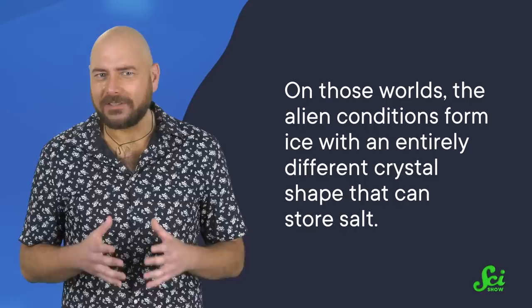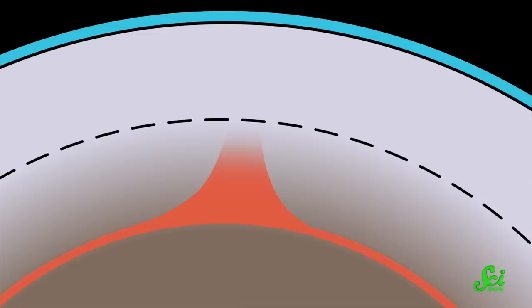But Earth's ice isn't under high pressure like the ice on those exoplanets. On those worlds, the alien conditions form ice with an entirely different crystal shape that can store salt. And salt that gets dissolved into the bottom of that ice layer won't just stay there. The temperature difference between the upper and lower levels of the ice will cause the whole thing to churn, moving the salty stuff up until it touches the base of the liquid ocean and delivers its salty goodness to the water above.